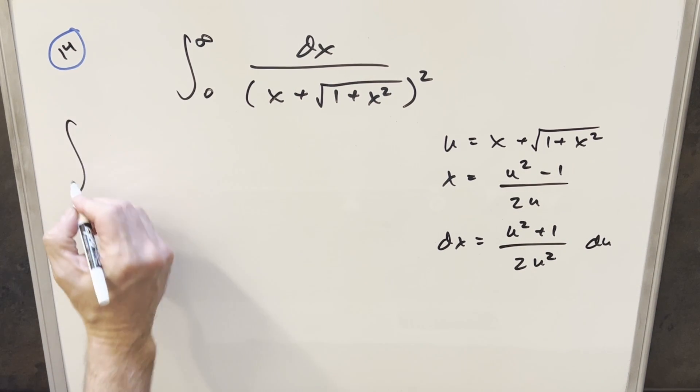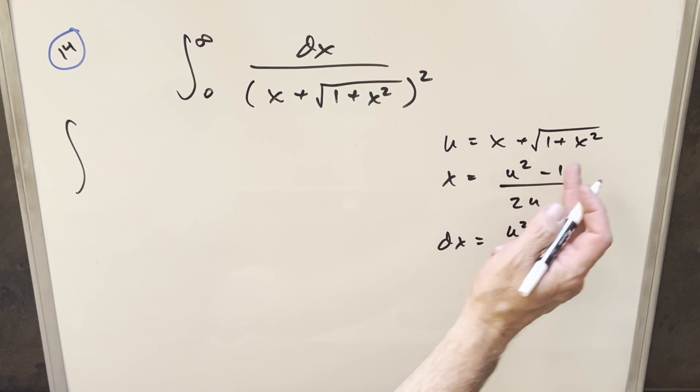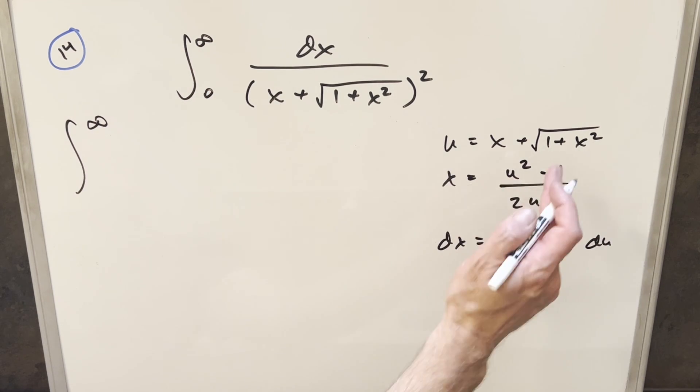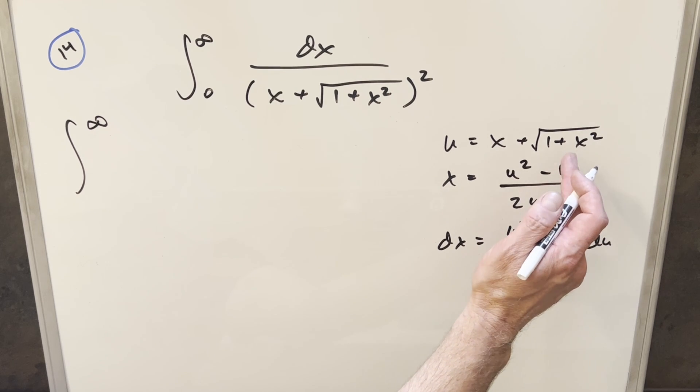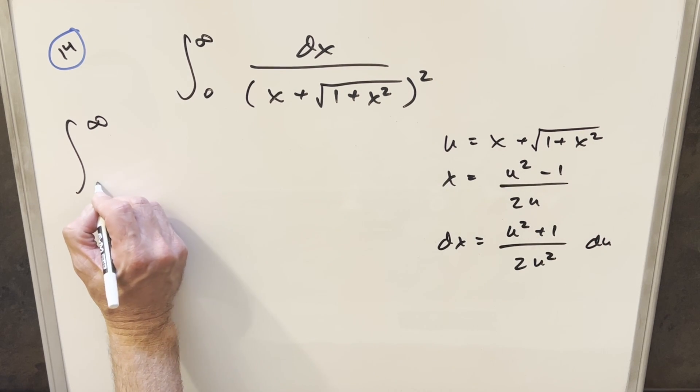Next, we'll just go ahead and substitute. So first, updating the bounds, you plug infinity in there and it's still going to infinity. You plug 0 in here. Now I need to be a little more careful. That's going to be 0. That's going to be 0. So we just have square root of 1 or just 1 for the lower bound.